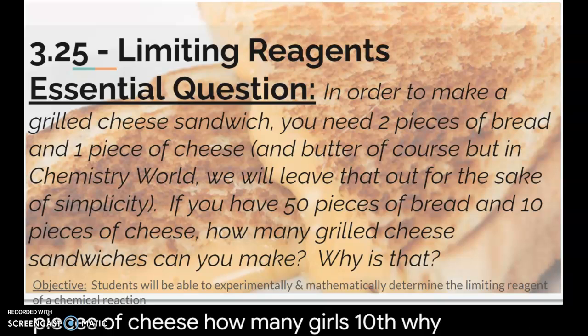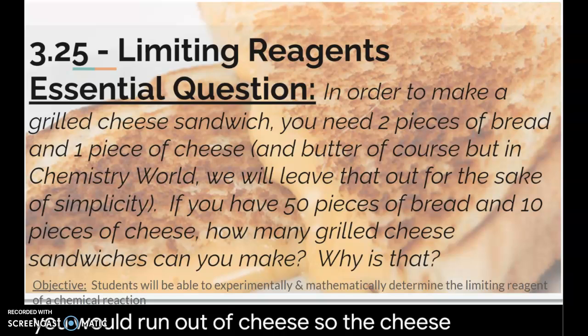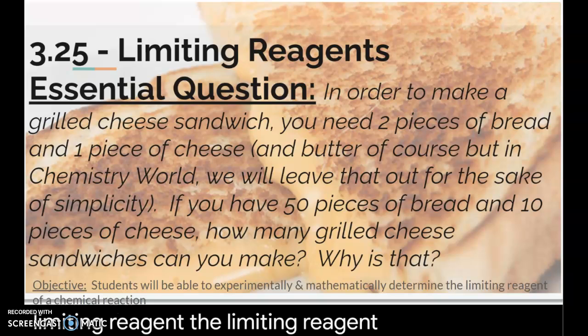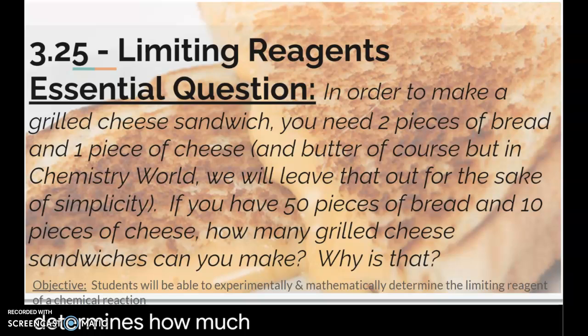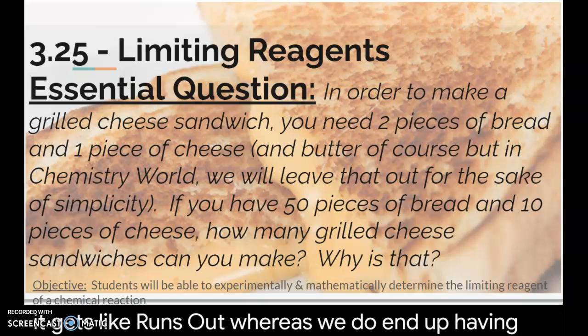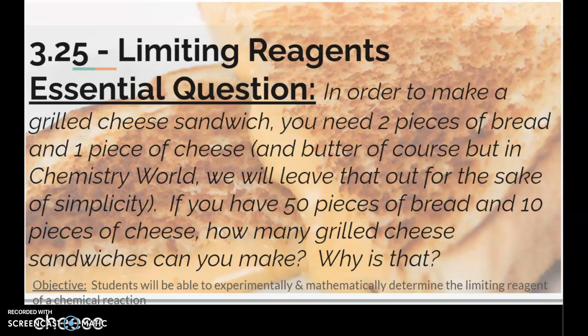Because we only have 10 pieces of cheese. Right. So you would run out of cheese. So the cheese is your limiting reagent. The limiting reagent is the thing that determines how much product we can make because it runs out. Whereas we do end up having extra bread left over, but you can't make a grilled cheese if you don't have cheese.